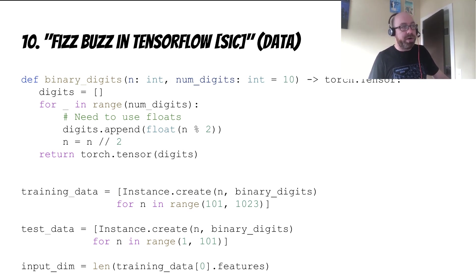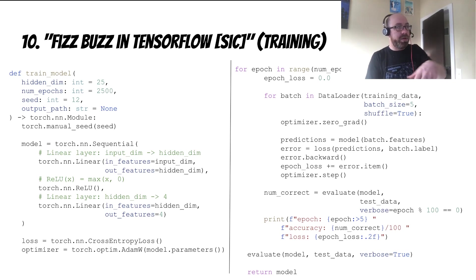Then to do good machine learning discipline, we train on the numbers from 101 up to 1023, and I could have done 1024. We test on 1 to 100, which is what we wanted. And then we've done good machine learning. Here's just a training loop to train the model, and it sort of works.